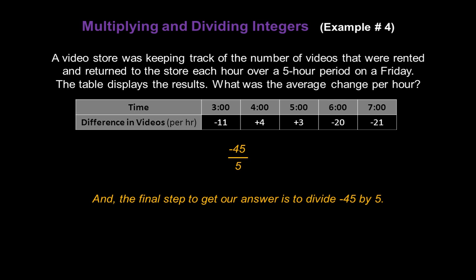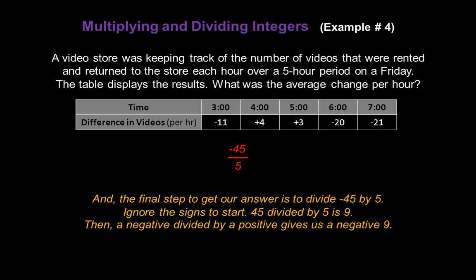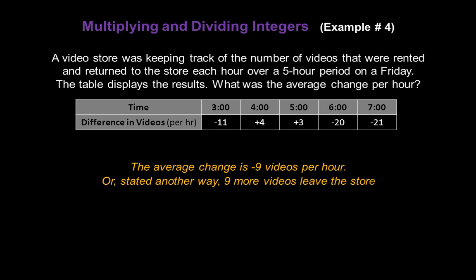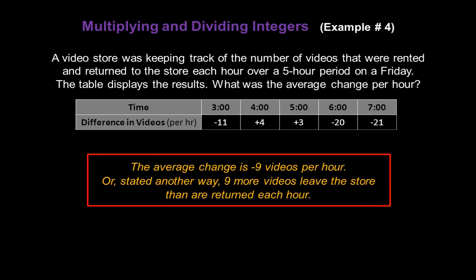That's the final step to getting our answer. We have to divide negative 45 by 5. Ignore the signs to start — 45 divided by 5 is 9. Then, a negative divided by a positive gives us negative 9. But since it's a word problem, our answer has to be in words. The average change is negative 9 videos per hour. Or stated another way, 9 more videos leave the store than are returned each hour.